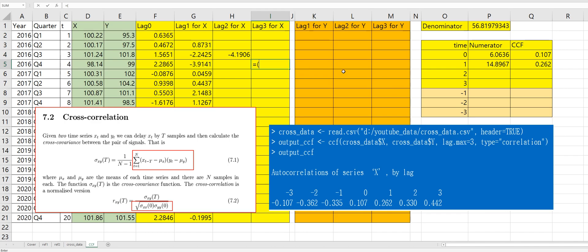And for X3, this one minus average of X variable times first value of Y variable minus average of Y variable. Sum of lag two for X and sum of lag three.